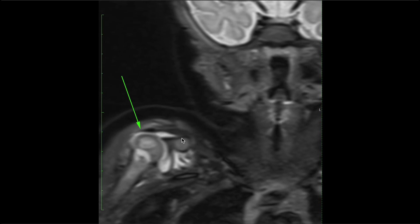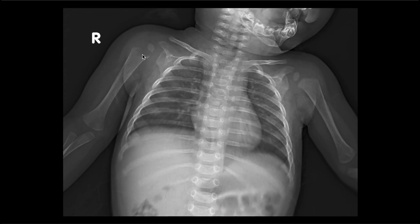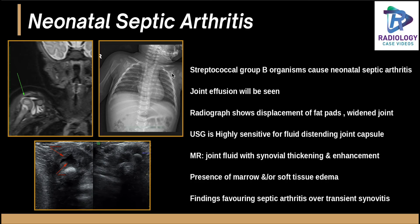Coming to another case: this MRI image shows synovitis, metaphyseal edema, and epiphyseal edema with joint effusion — classical features of neonatal septic arthritis. On USG, there is capsular thickening and joint effusion, with no destruction or fragmentation of the metaphysis or epiphysis. On X-ray, widening of the epiphyseal and physeal plate is seen, with some lucency corresponding to destruction and osteopenia, and an enlarged capsule. This is a neonate, so the most common causative organism is Group B Streptococcus. USG is highly sensitive for distending fluid; MRI can demonstrate synovial thickening, enhancement, and marrow or soft tissue edema.